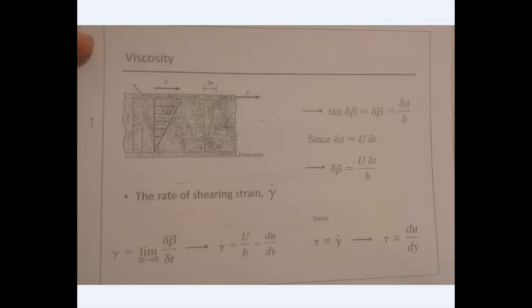Since delta beta is so small, tangent delta beta will be almost equal to delta beta, equal to the opposite over adjacent delta A over delta y. So I calculate the limit delta beta over delta T, which is delta A over delta y times T, which is distance over time, which is velocity, which would be equal to du over dy. That would be the shearing strain, the rate of the shearing strain.